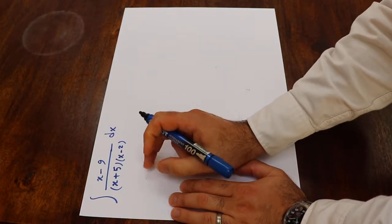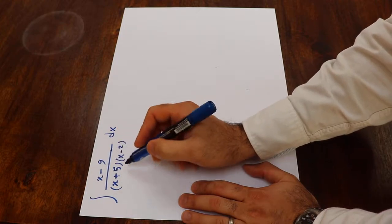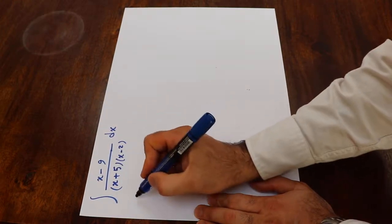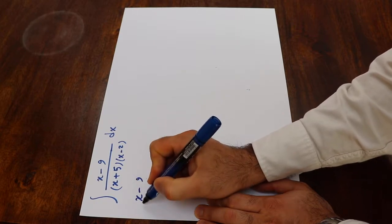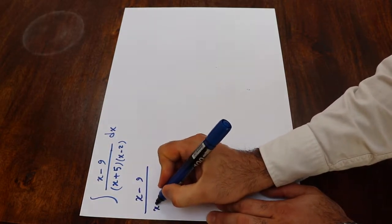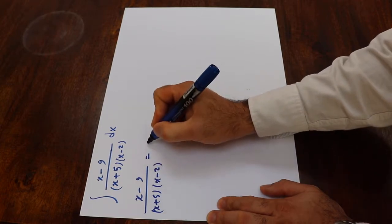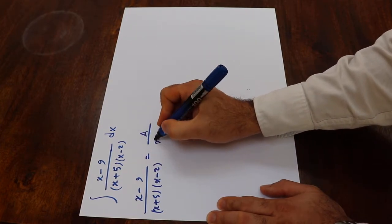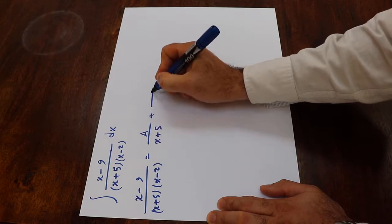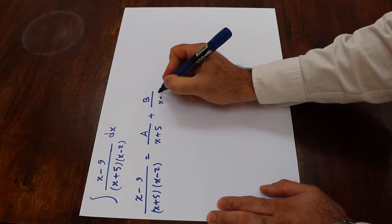To solve this integral, you have to first express this rational function as the sum of partial fractions. So to do that, you write x minus 9 divided by x plus 5 times x minus 2 will be equal to a divided by x plus 5 plus b divided by x minus 2.